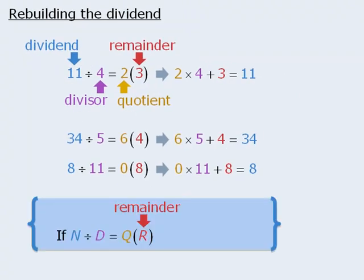In general, if n divided by d equals q with remainder r, then it must also be true that q times d plus r is equal to n.